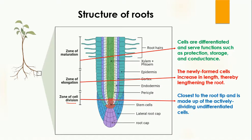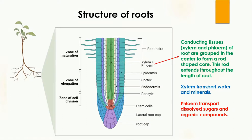The last zone is the zone of cell division. As the name indicates, it contains cells that are actively dividing and are undifferentiated — they do not know their purpose yet. They are under mitosis, dividing from one cell into two, and two into four, and so on.